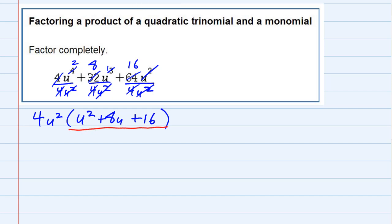So I'm going to bring down the 4u squared, and then we're going to factor that trinomial. Now, since the leading coefficient is u squared, I only have one choice. It has to be u and u.